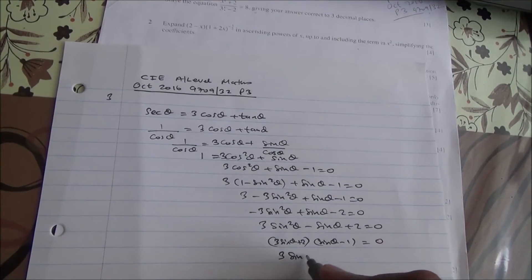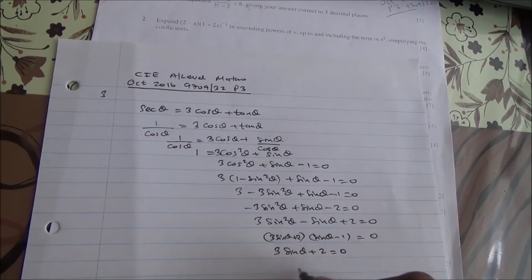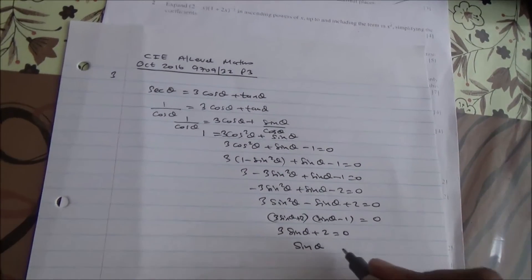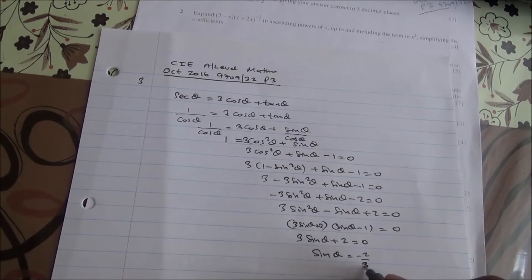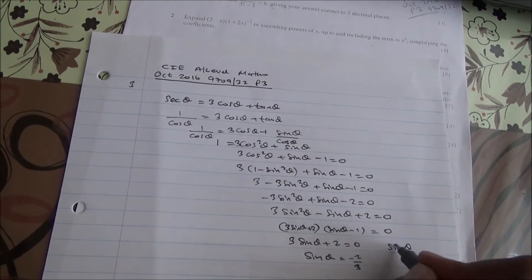So we've got (3sin θ + 2)(sin θ - 1) = 0, giving sin θ = -2/3 or sin θ = 1.